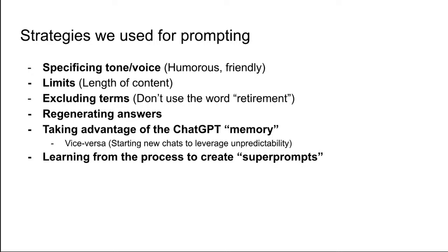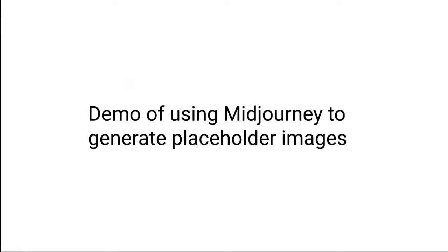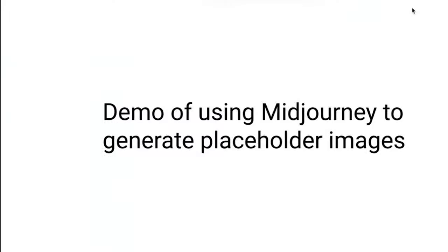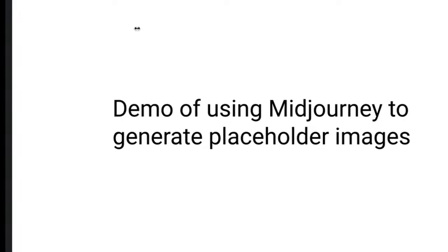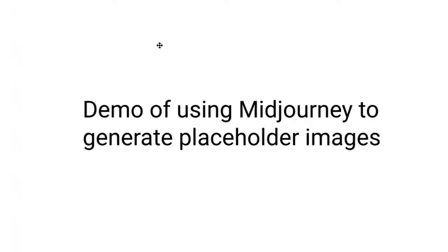And then, learning from the process to come up with a super prompt: if you put all the context up front in that initial prompt, you get a much better result. Now we're going to show you the really cool stuff — giving prompts to a system that, instead of giving us words, gives us images. That's MidJourney. For those watching — the ChatGPT section is kind of over. MidJourney is image generation and uses a very similar concept.